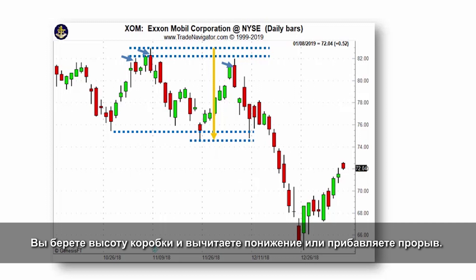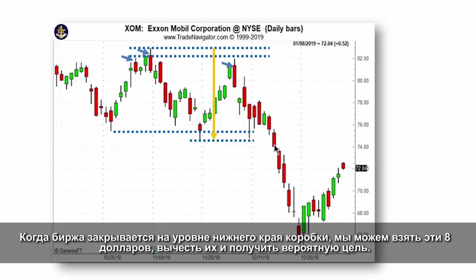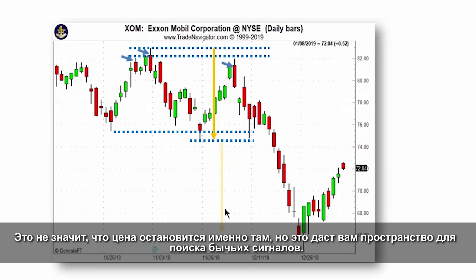You take the height of the box and either subtract it on a breakdown or add it on a breakout. In this case, we have this distance from about $74 to $82 — so that's about eight dollars. Once the market closes under the bottom end of the box range, we can take that eight dollars, subtract it from the bottom end, and get a potential target.